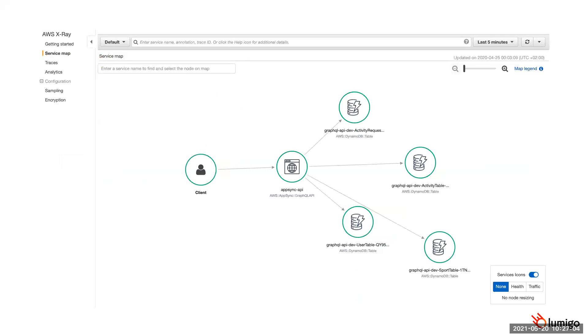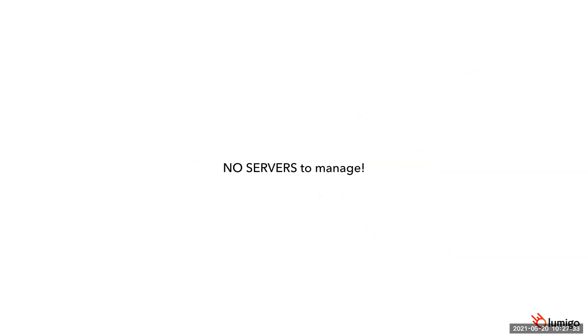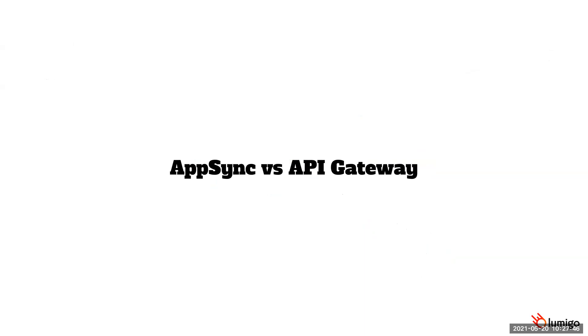X-Ray provides a service map view, but given that most APIs talk to many different things, it can be overwhelming without good ways to navigate and narrow things down — which is where Lumigo comes in. AppSync is a managed service, so you don't have to manage any servers. Comparing AppSync to API Gateway, beyond the inherent advantages of GraphQL over REST, AppSync specifically does several things really well: caching, monitoring, WebSocket support through GraphQL subscriptions, and integration with AWS WAF for firewall rules.